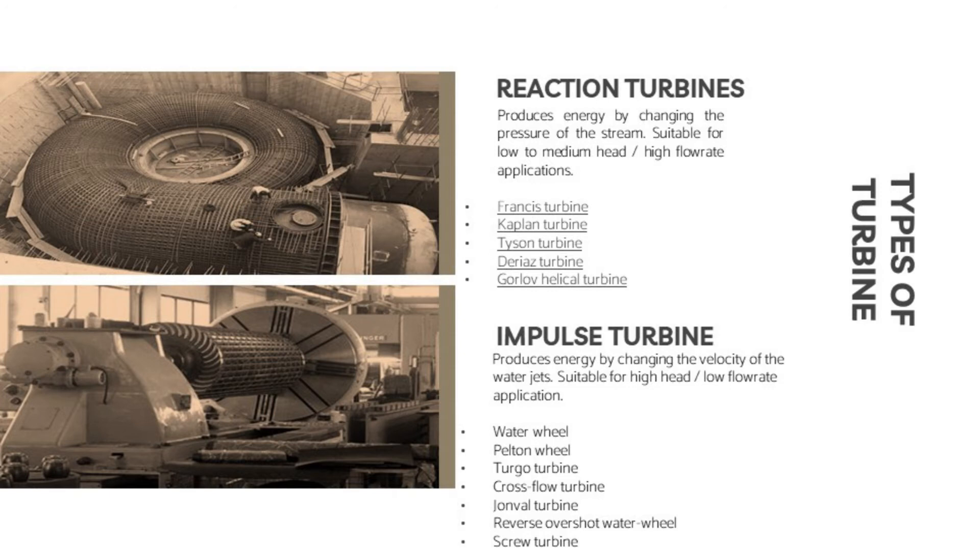For impulse turbines, they produce energy by changing the velocity of the water jets, suitable for high head, low flow rate applications. Examples are water wheel, Pelton wheel, Turgo turbine, cross flow turbine, Jonval turbine, reverse overshot water wheel, and screw turbine.